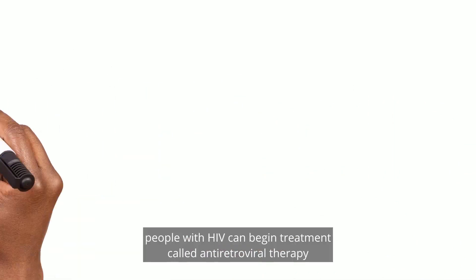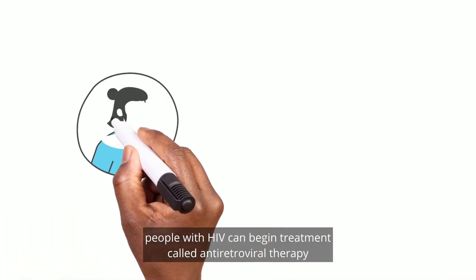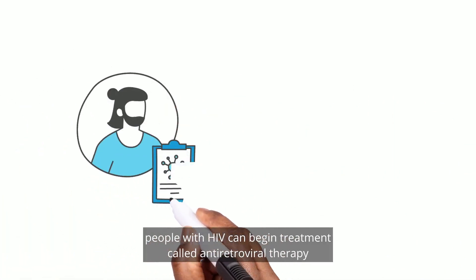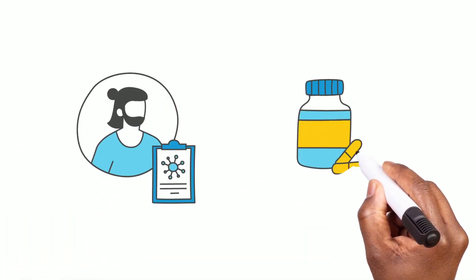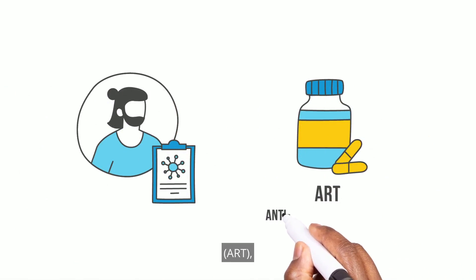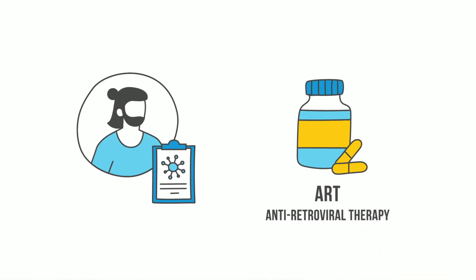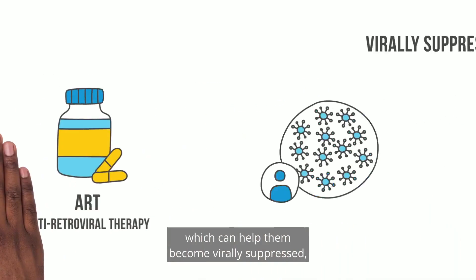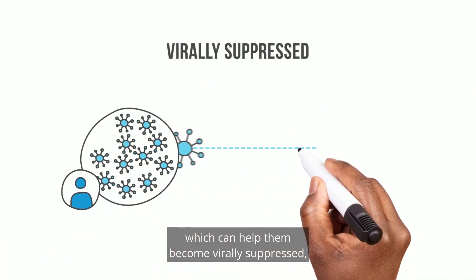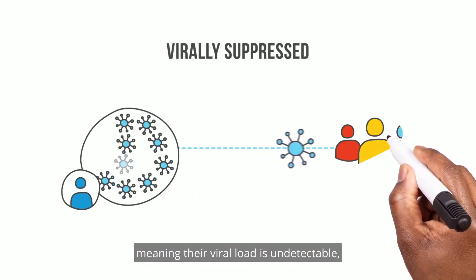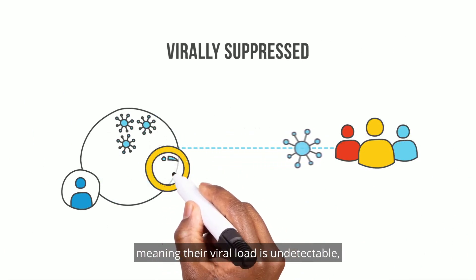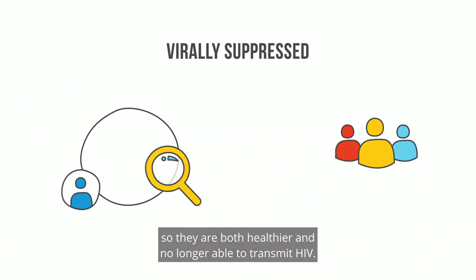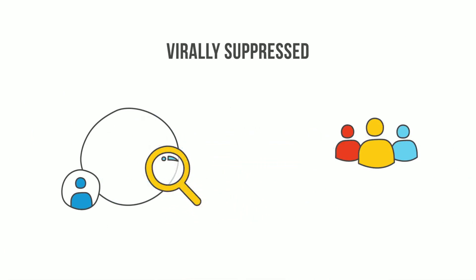After testing, people with HIV can begin treatment called antiretroviral therapy, or ART, which can help them become virally suppressed — meaning their viral load is undetectable — so they are both healthier and no longer able to transmit HIV.